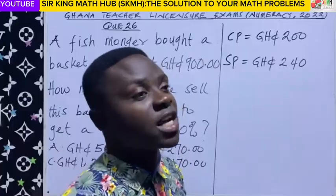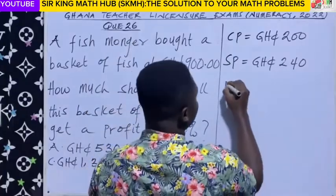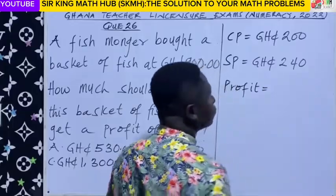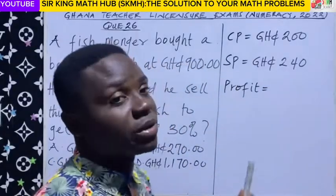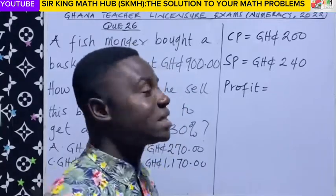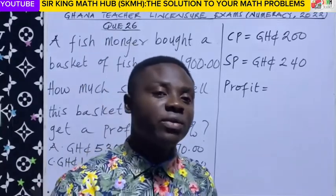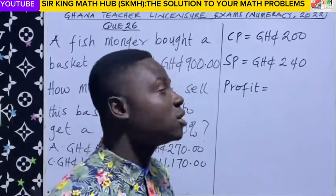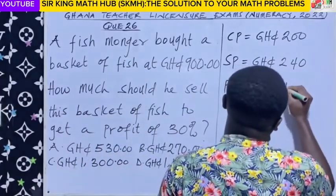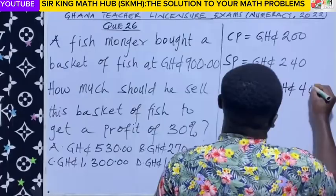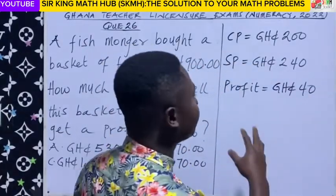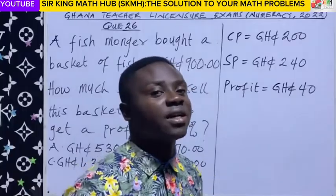So how much profit are you making? You bought it at a cost of 200 Ghana cedis and sold it at 240 Ghana cedis, so obviously you are making a profit of 40 Ghana cedis.